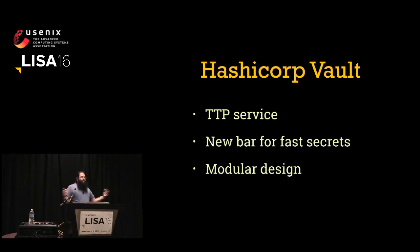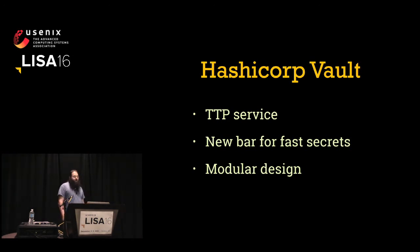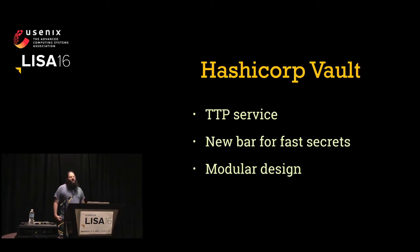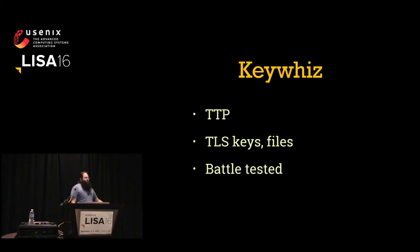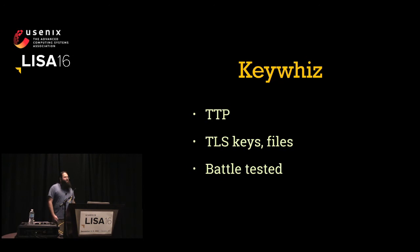HashCorp Vault is a new kit on the block but already generating excitement about secrets management. It's got all the things you'd expect from a purpose-built secrets management platform: good audit logs, good ACLs, modular authentication frameworks, modular storage frameworks, and probably the best-of-breed auto-rotation system for fast secrets. Slightly older but still very solid is Square's KeyWiz, which has a more limited data model but is more battle-tested. KeyWiz excels at key-type secrets, less so for passwords and tokens.